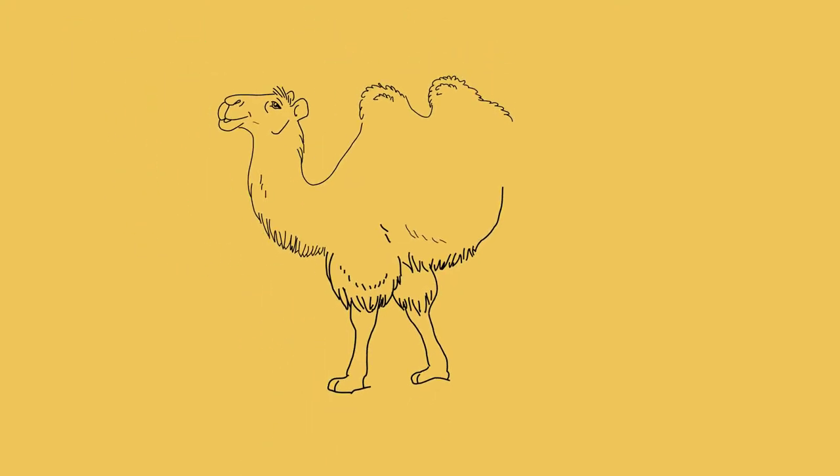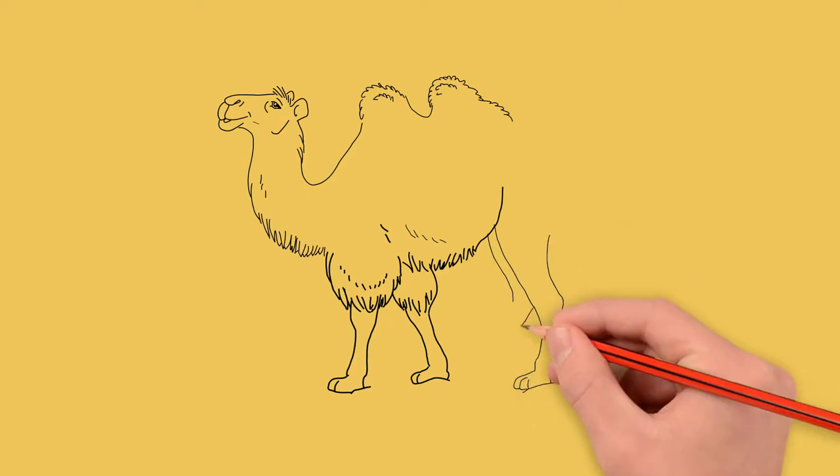Draw the two hind legs too, in motion. They follow step by step the front legs. And also have the same hooves. Only the shape of the leg itself differs from the front legs.